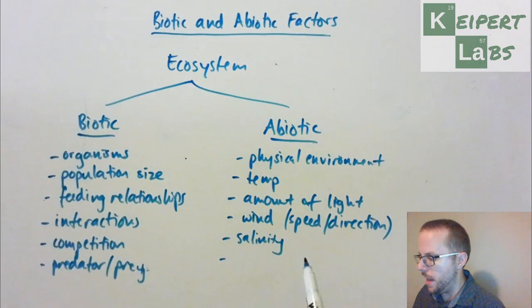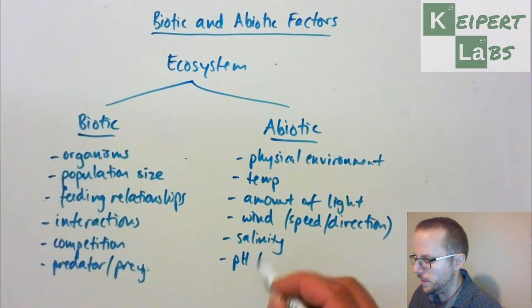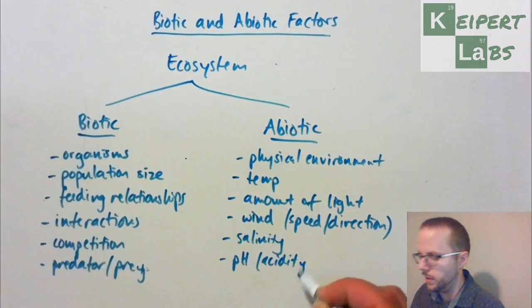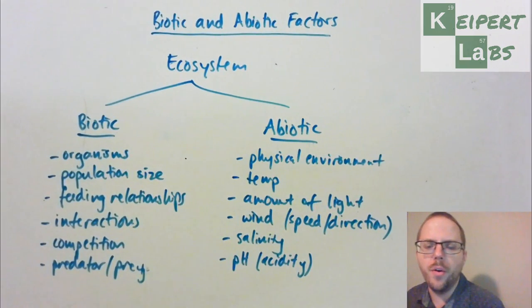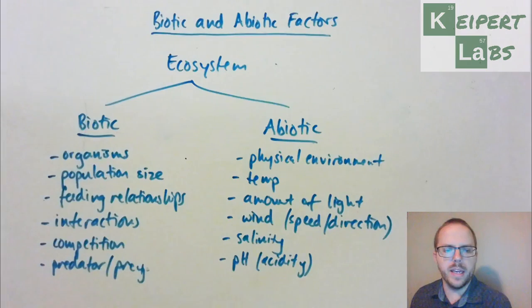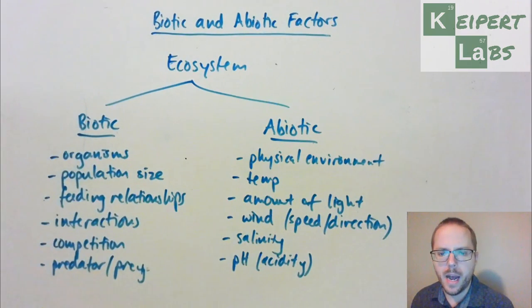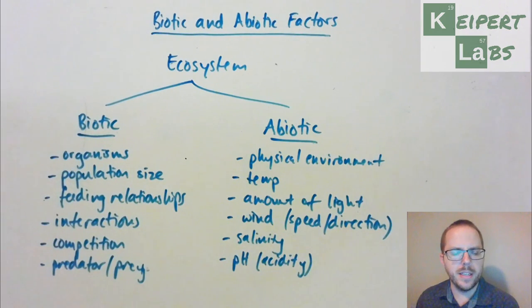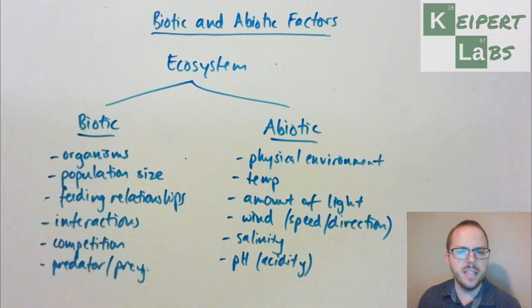We're looking at pH, which relates to the acidity of the soil or of the oceans. Those sorts of things will affect what living things are found there. These are just a couple of quick examples, far from an exhaustive or extensive list.